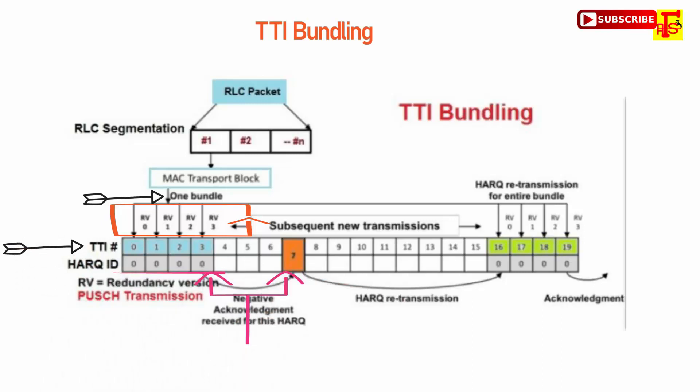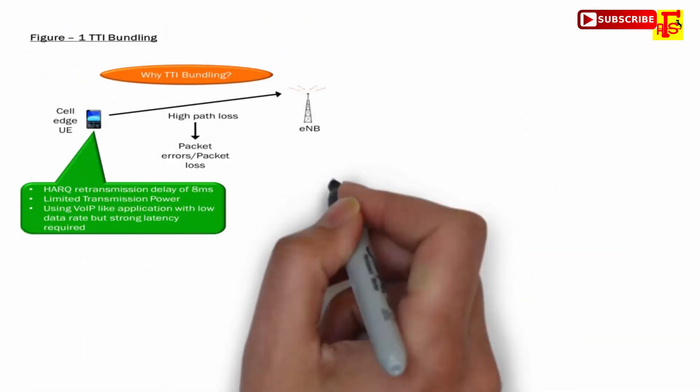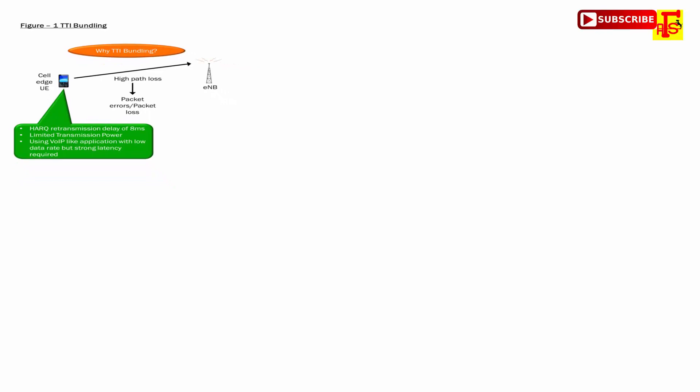Here, less RLC MAC header will be used, overhead will be less. Less L1, L2 messages will be triggered. This is the advantage of TTI in bad radio conditions. So TTI bundling will be configured by eNodeB in situations like when radio condition is poor or UE is available in cell edge area.